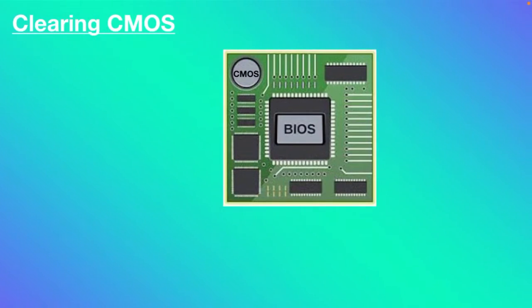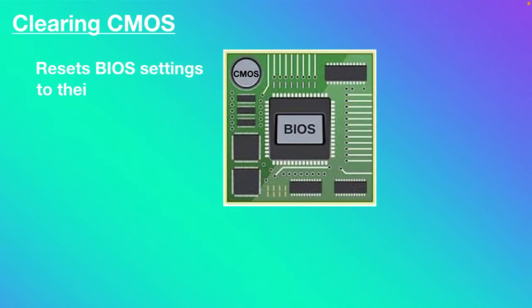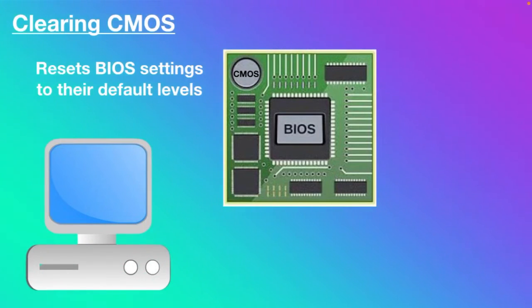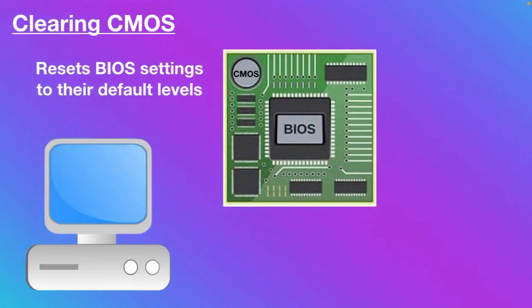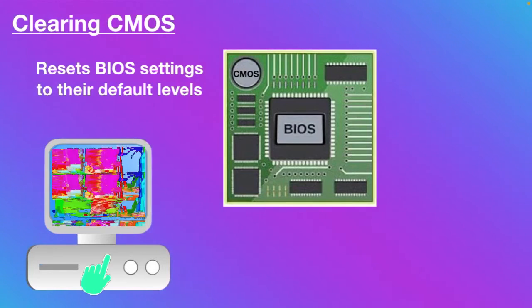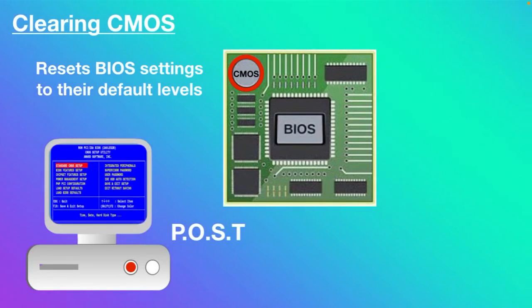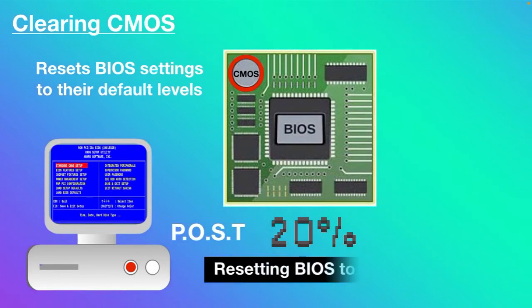Clearing CMOS is another important point to mention. It resets the BIOS settings to their default levels. This is a really easy task and a great troubleshooting step for many types of computer problems. For example, if your computer is freezing up during the Power-On Self-Test, clearing CMOS to reset the BIOS settings to factory default levels is the easiest solution.